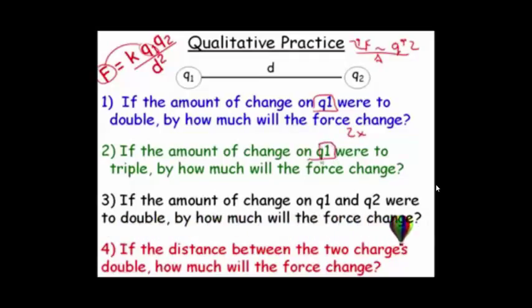What about if Q1 were to triple? Well, by the same logic, three times. What about if Q1 and Q2 were to double? We know that the force is directly related to charge one and charge two. Again, if we double this one, we have to double the force on the other side. We double the other one, we have to double this again. So, 2 times 2 looks like 4 times.